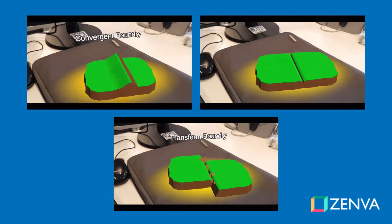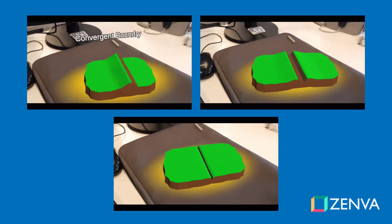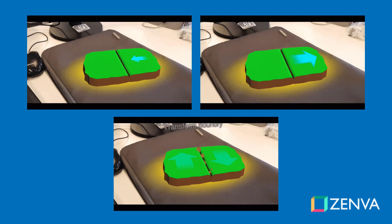Let's have a look at what we'll be learning in this course. First of all we'll be learning how to use EasyAR in Unity. EasyAR is an augmented reality SDK which allows us to use image targets. These are little QR codes that you can print out that the app can identify — you can figure out its position, its rotation and its scale, and can then render models, particle effects or whatever you want on top. In our case we're going to be rendering these two tectonic plates as well as the little lava image.